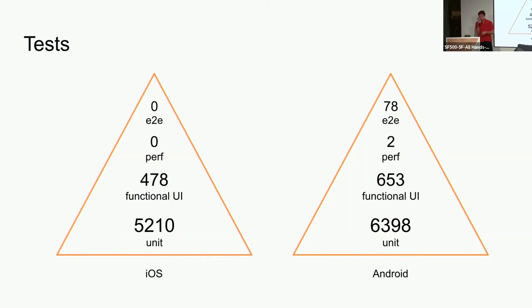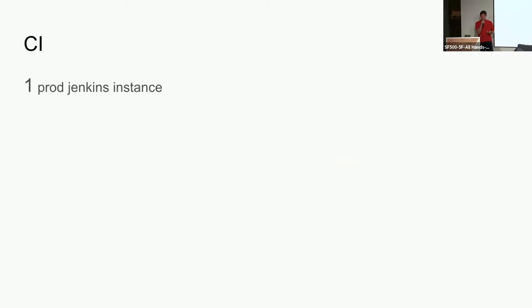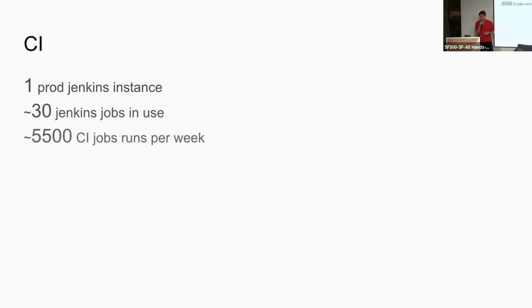All of these tests run on every single PR the minute the developer opens a PR — they all run pre-merge. For CI, we have one of many Jenkins instances. We have about 30 Jenkins jobs and roughly 5,000 CI runs per week.